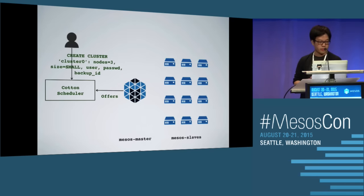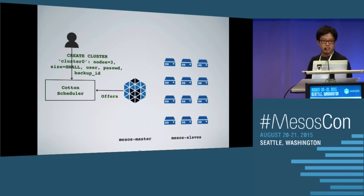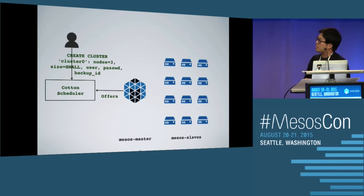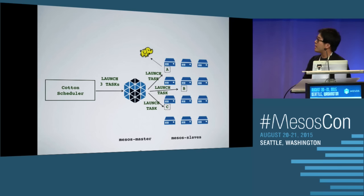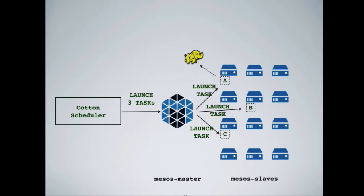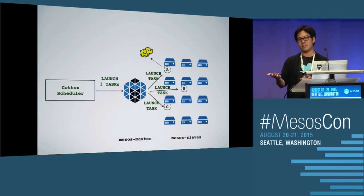Here's a concrete example. The user calls the HTTP API to create a cluster with a name and parameters — including a backup from which the new MySQL instance should recover. The scheduler matches that request with an offer from the Mesos master and launches tasks. On each box, there's complexity: you have to download MySQL software and recover state from backups, which rely on external services. At Twitter we use HDFS for this, but that's just our example.